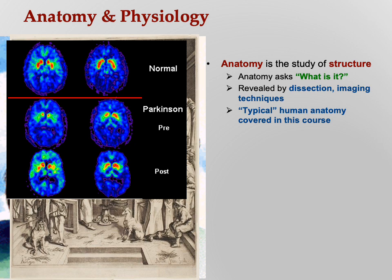At the top you see it says 'normal.' This might be where they had a person doing two different things — let's say reading poetry on the left and doing math problems on the right. Below that, we look at Parkinson's — we'll be talking about Parkinson's disease this semester.